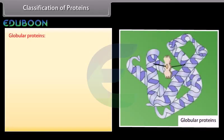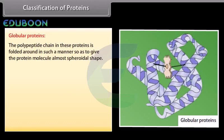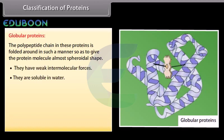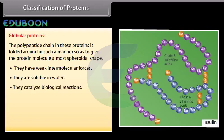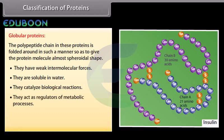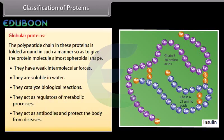Globular proteins: the polypeptide chain is folded around in such a manner so as to give the protein molecule an almost spheroidal shape. They have weak intermolecular forces and are soluble in water. They catalyze biological reactions, for example, insulin and thyroglobulin. They act as regulators of metabolic processes, for example, maintaining blood sugar level. They also act as antibodies and protect the body from diseases.